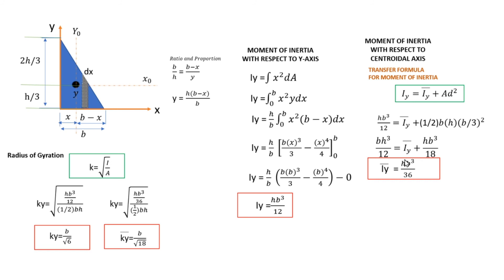For the moment of inertia with respect to the y-axis, I won't fully discuss it since only the strip orientation changes — the limits and differential area change to y·dx, and the ratio and proportion variables change accordingly. But the approach is the same as for the x-axis. Similarly for the centroidal axis derivation with the y-axis. Notice that in Iy the h and b are swapped compared to Ix: where Ix has bh³, Iy has hb³. The same swap applies to the centroidal axis formulas.